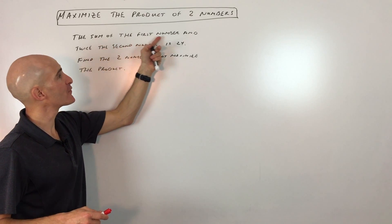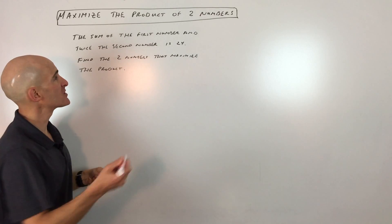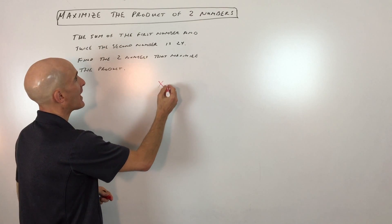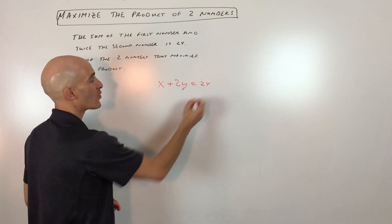Given the restriction that the sum of the first number and twice the second number is 24, let's look at that. So the first number we'll call x, twice the second number—the second number we're going to call y. The sum of those adds up to 24.